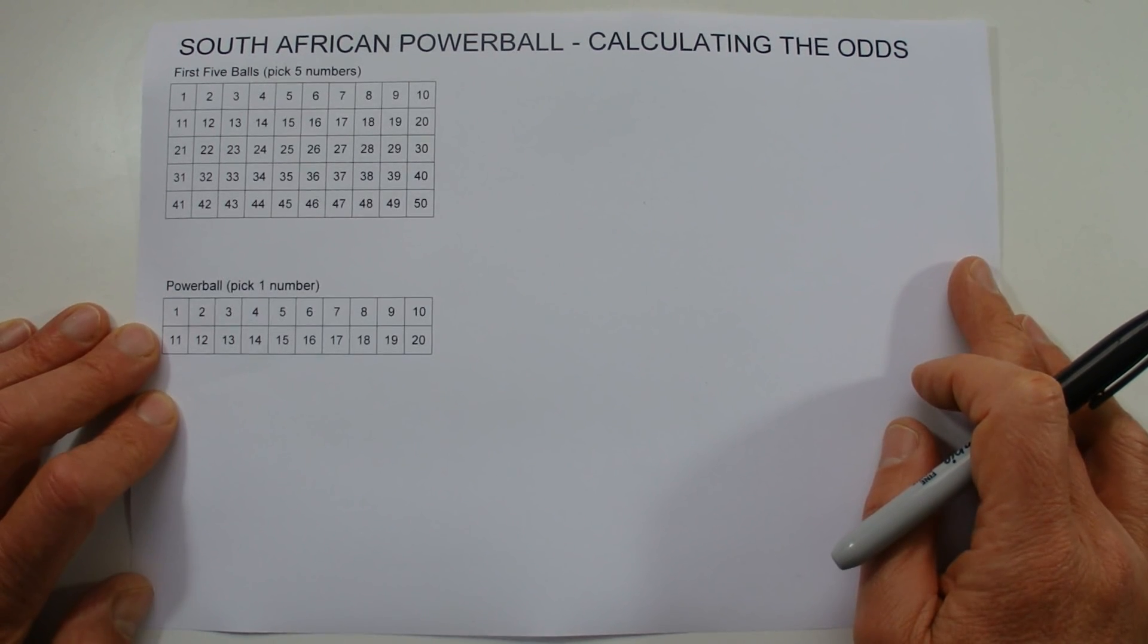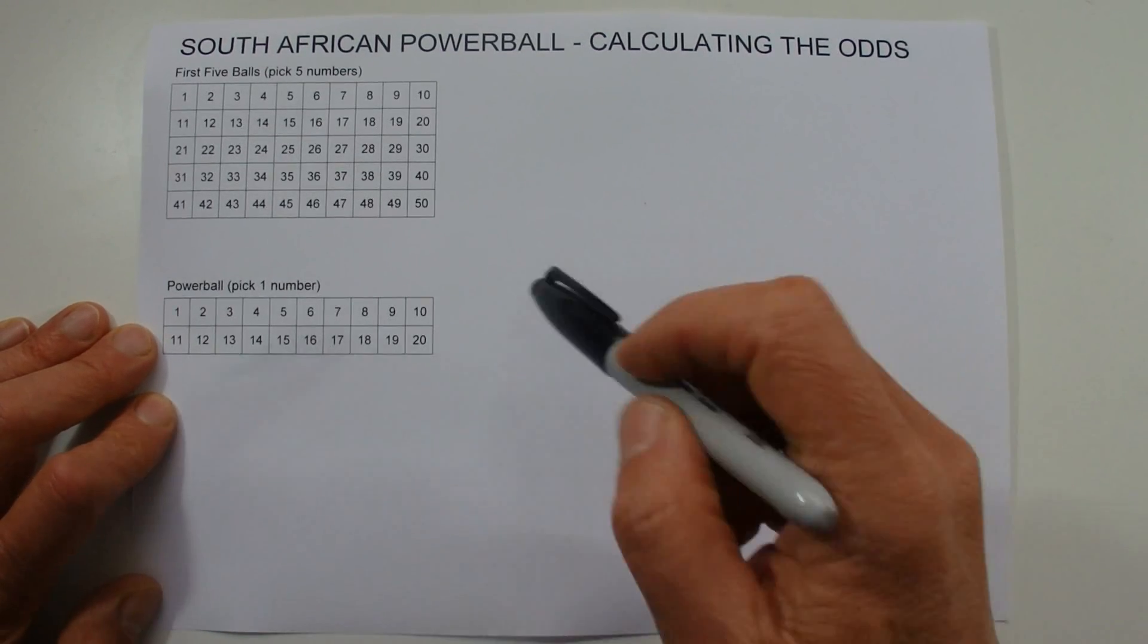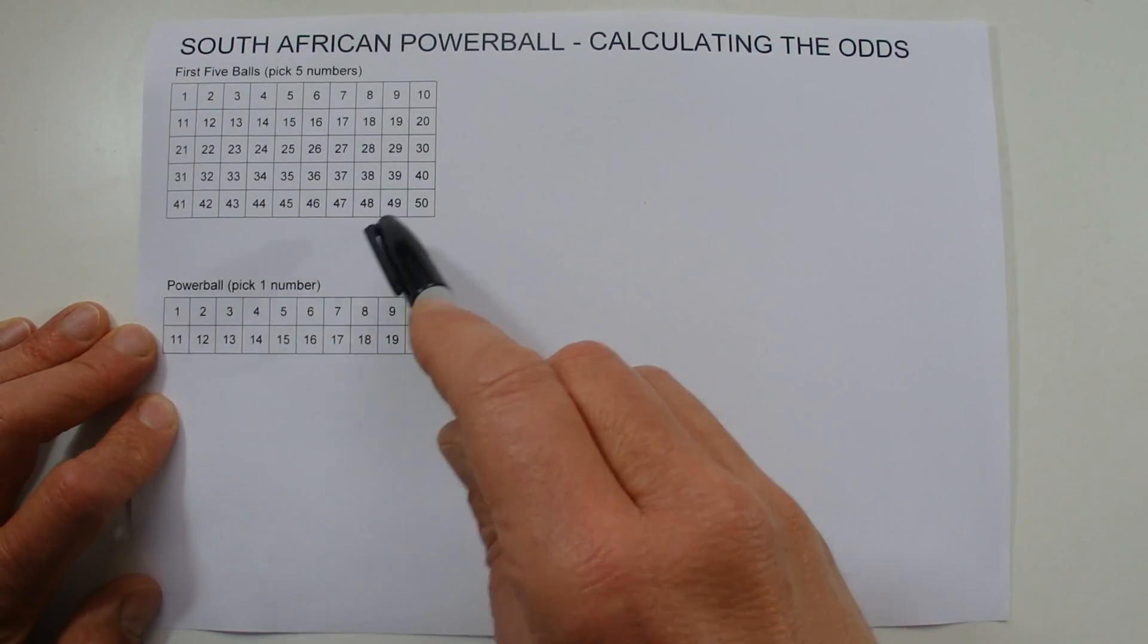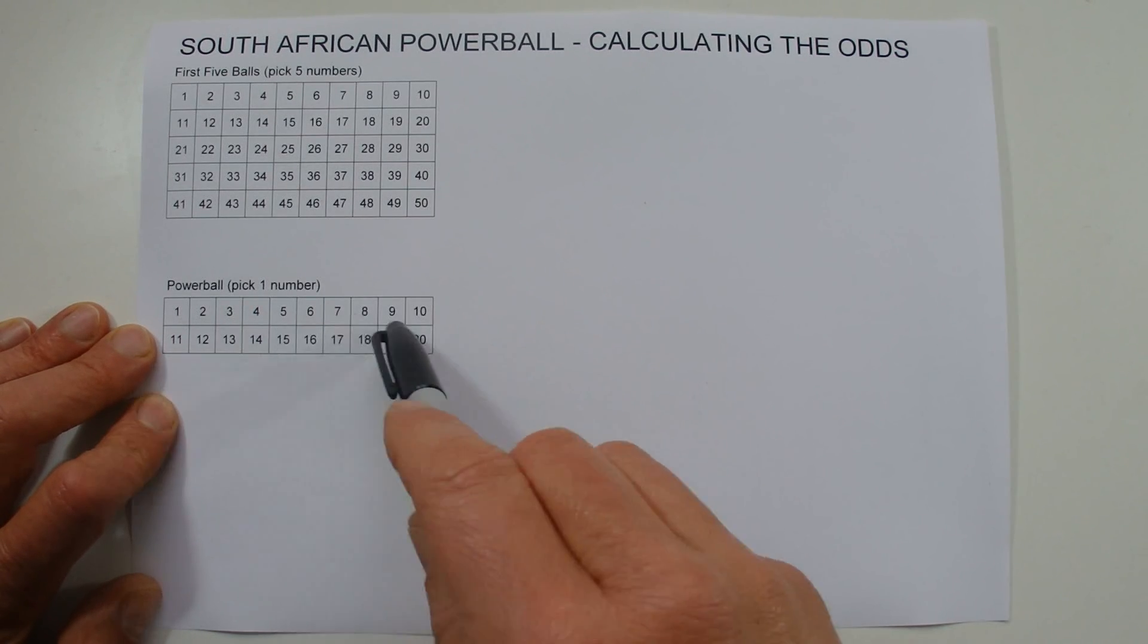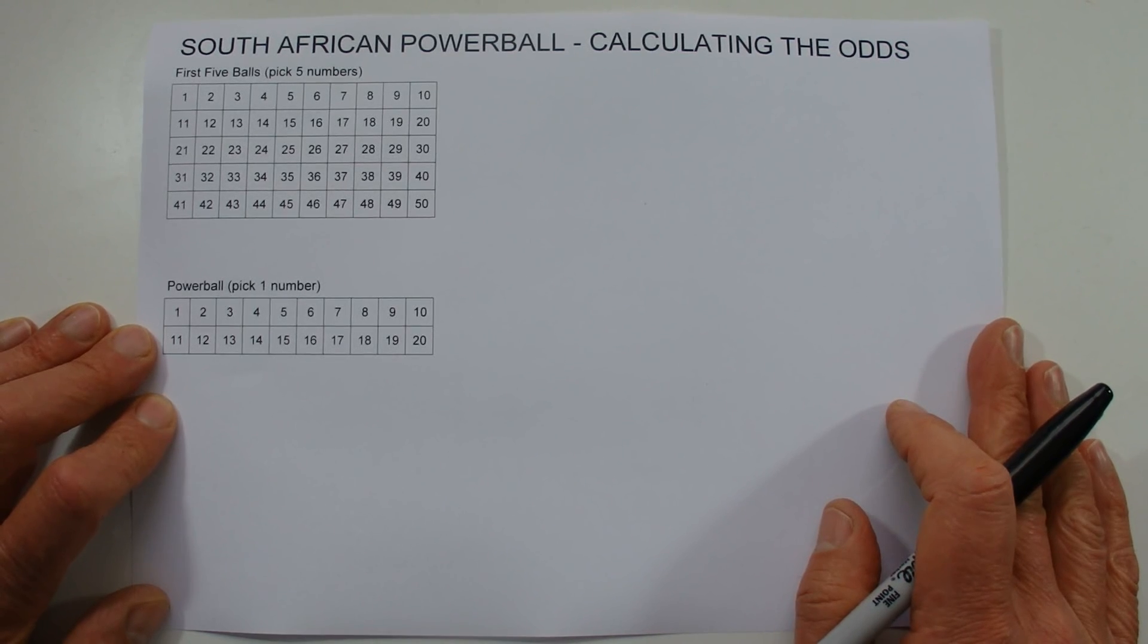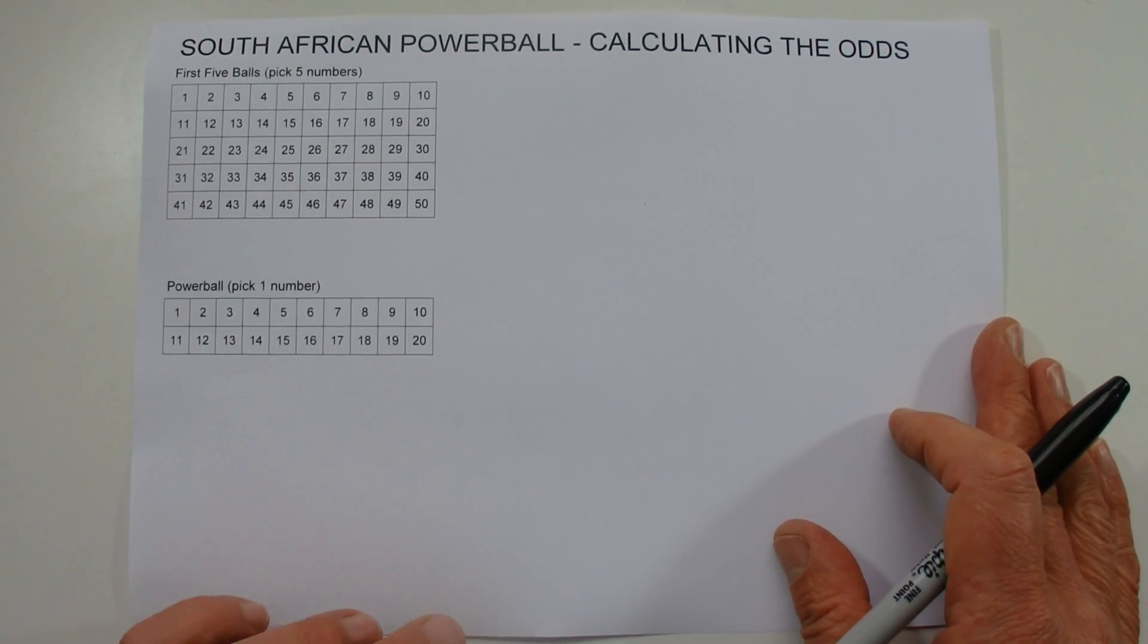Hi there. Today I'm going to show you how to calculate the odds of winning South African Powerball. This is winning first prize where you correctly pick five numbers from 50 and one number from 20. I've had a request from Tash3113 asking if I could do a video showing how to calculate these odds, so I thought why not, that sounds like a good idea.